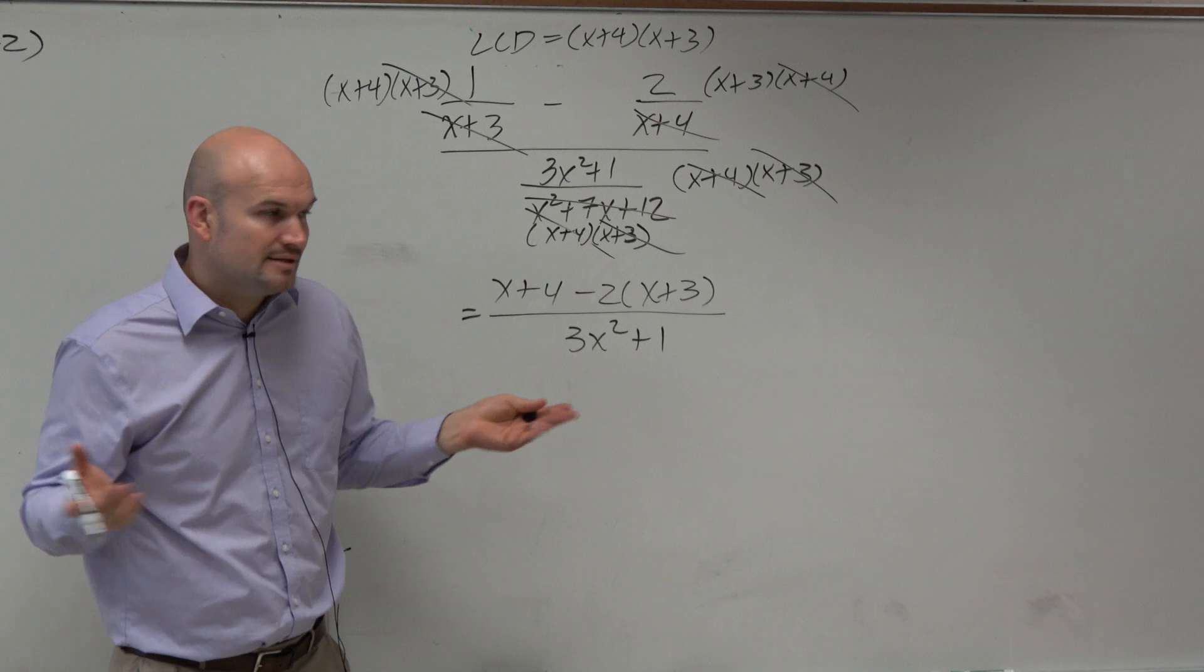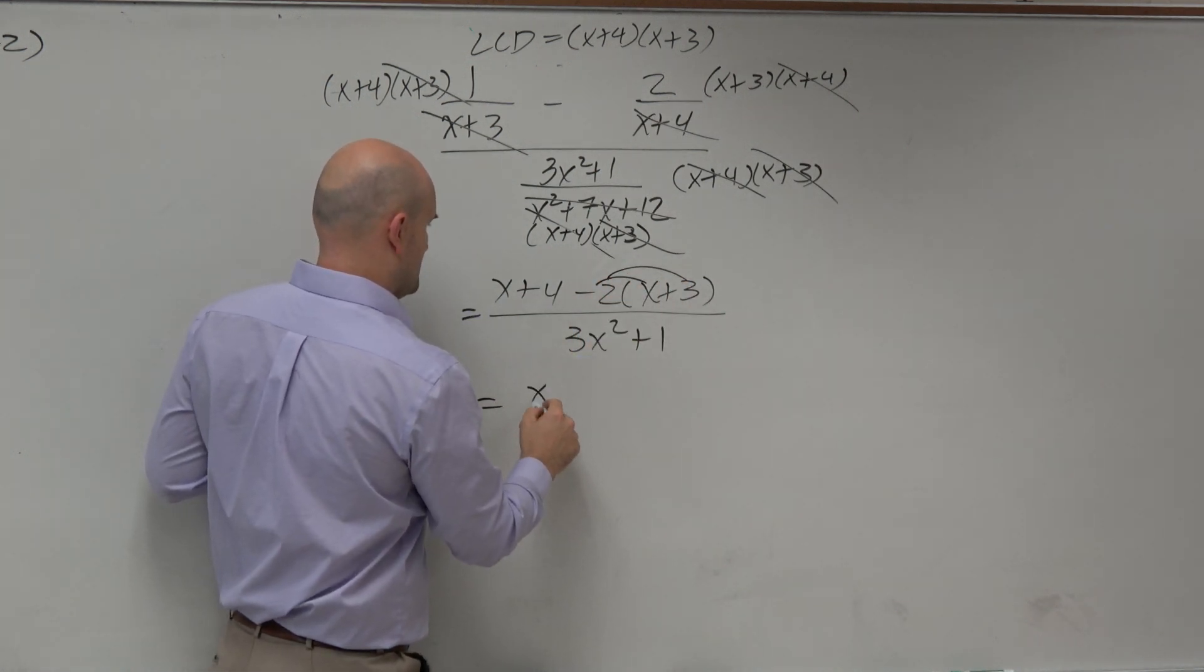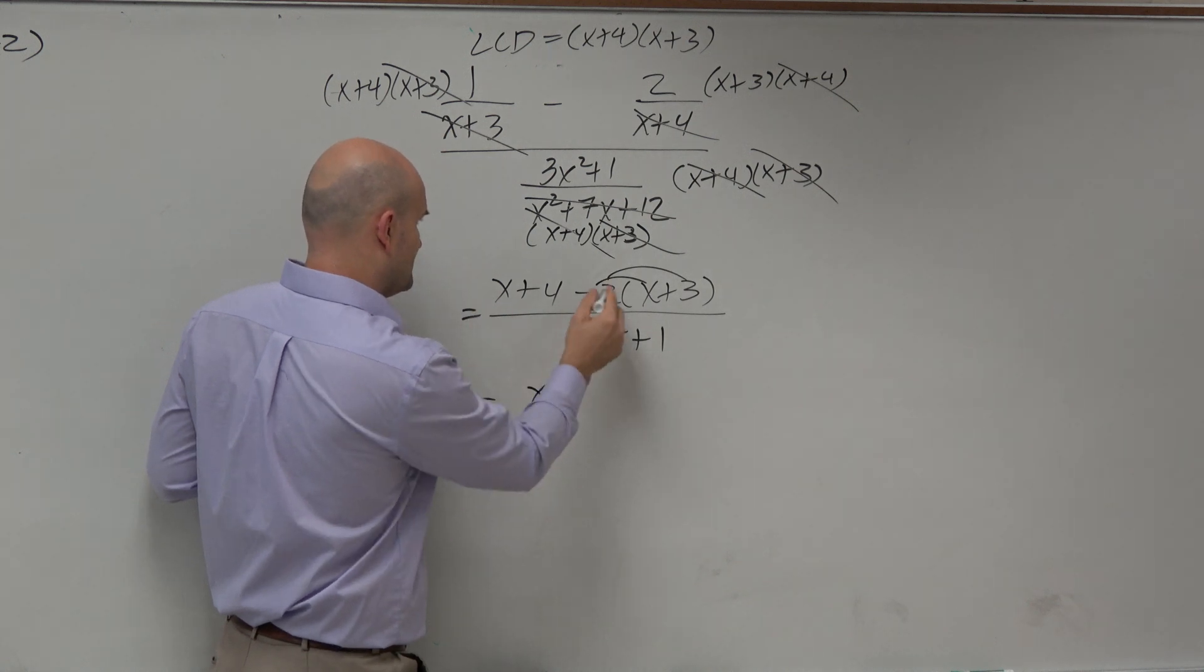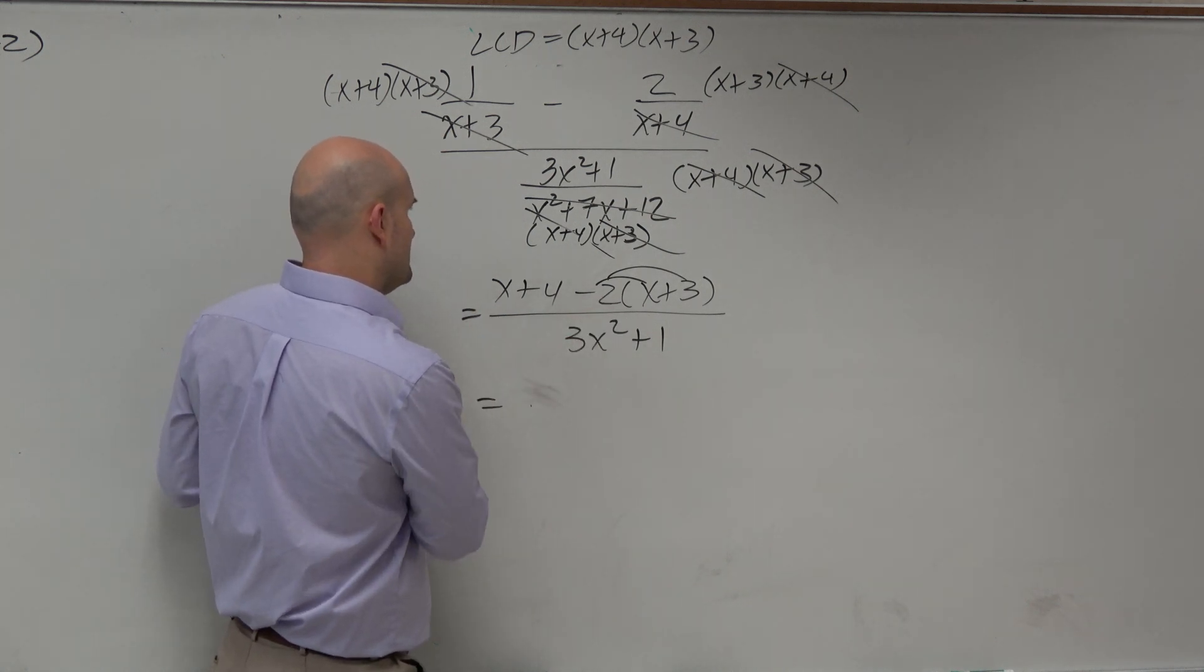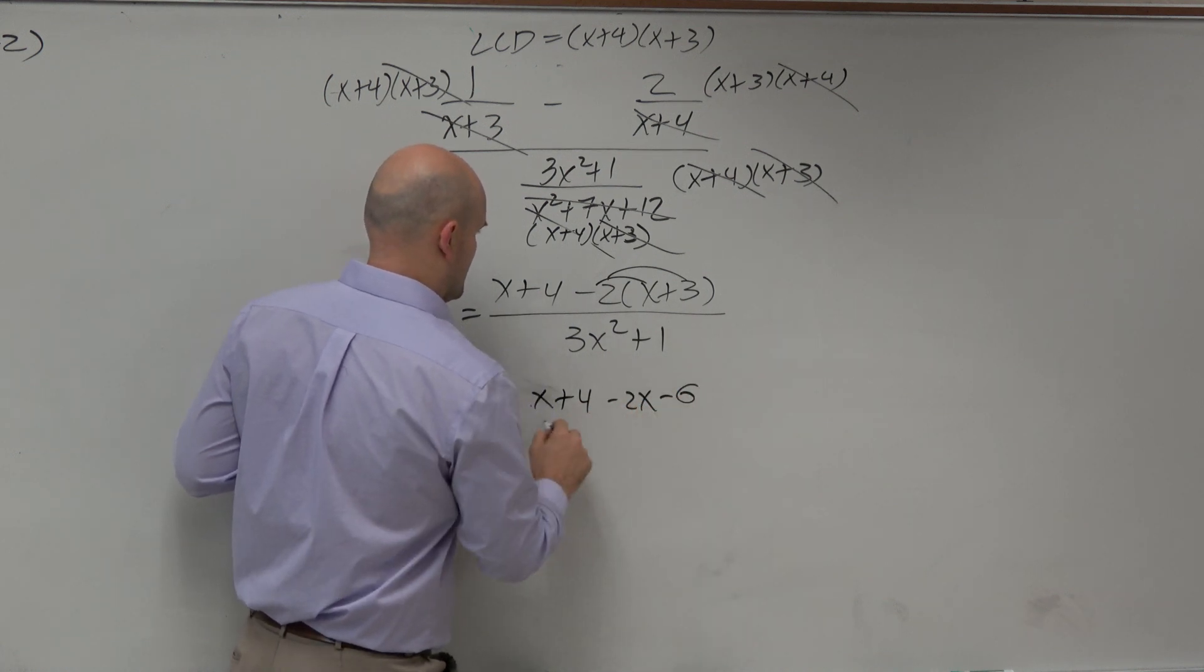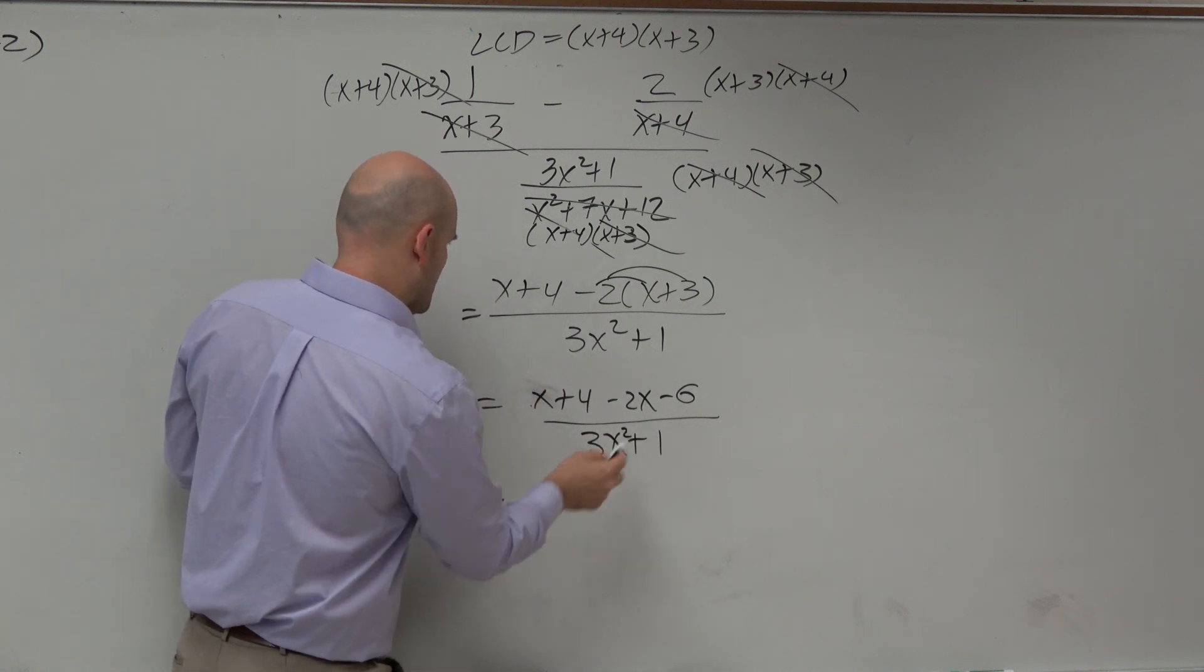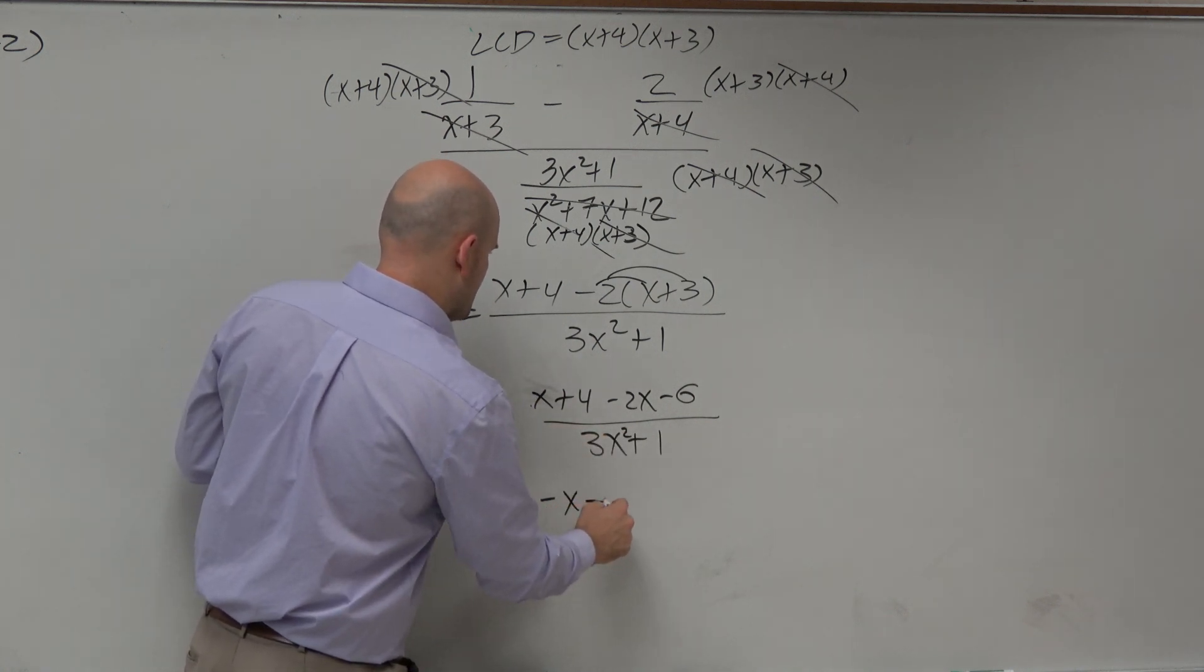Now we just have one big fraction, which is nice. So let's combine like terms, simplify here. Let's distribute the negative 2. So it becomes a negative x minus 2.